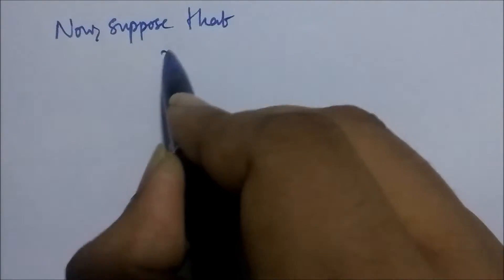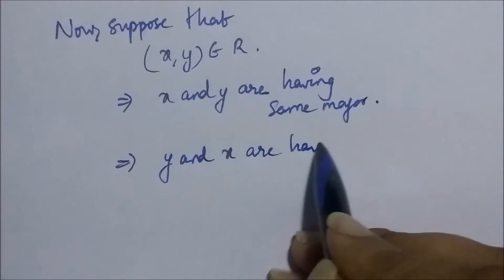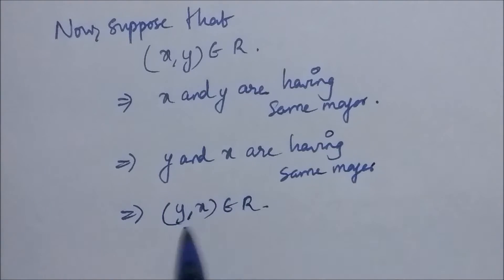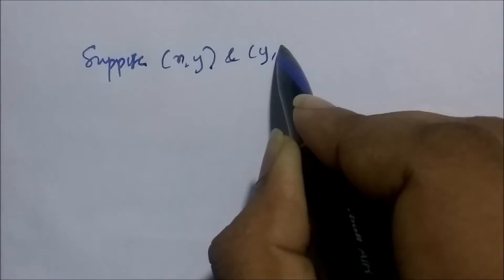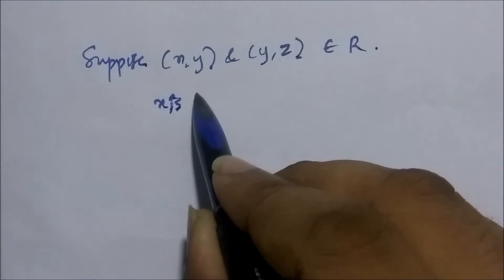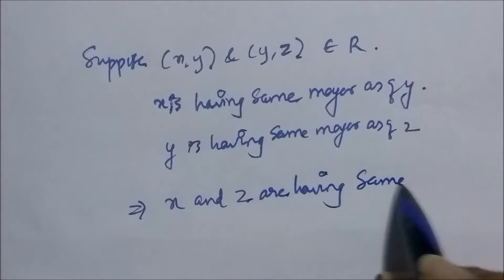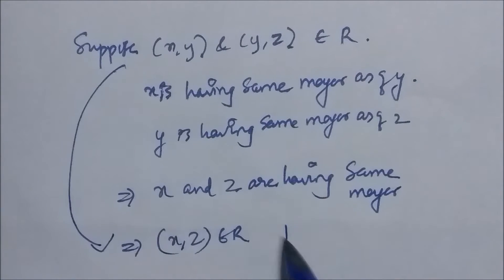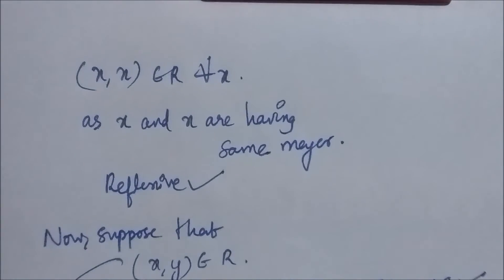Now suppose that x, y belongs to the relation, implying that x and y have the same major. This implies that y and x are also having the same major, so y, x belongs to the relation — the relation is symmetric. Now suppose x, y and y, z belong to the relation, meaning x has the same major as y and y has the same major as z. This implies x and z have the same major, so x, z belongs to the relation — the relation is transitive. Hence the relation R is an equivalence relation.